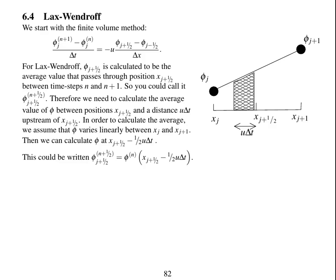For Lax-Wendroff, this is defined to be the average value that passes through position xj+1/2 between time steps n and n plus 1. So you could call this phi at j plus 1/2 at time level n plus 1/2.